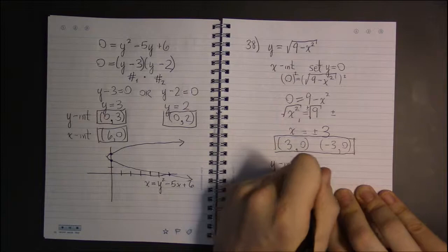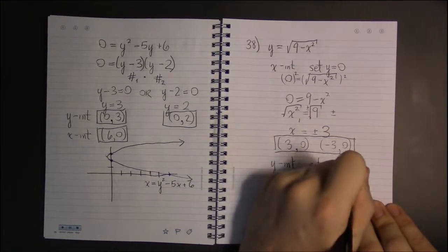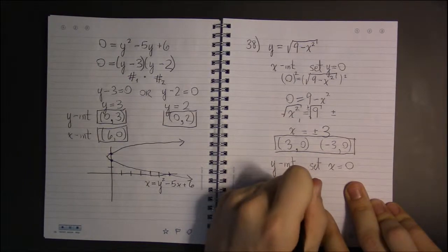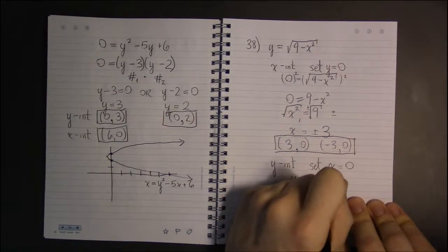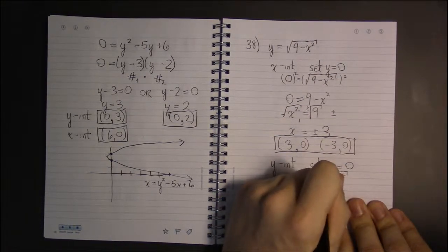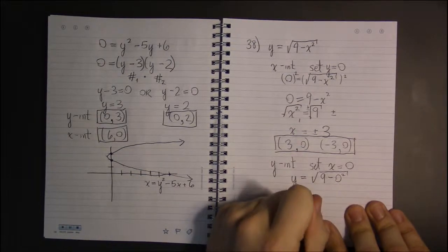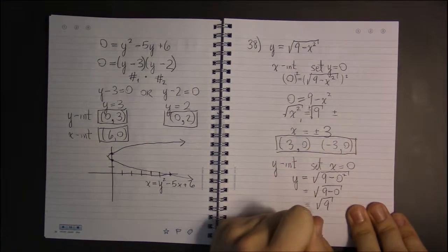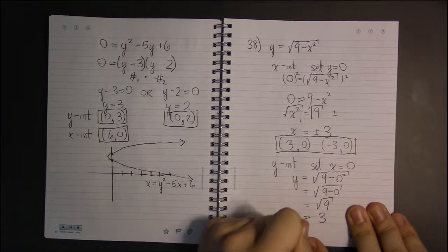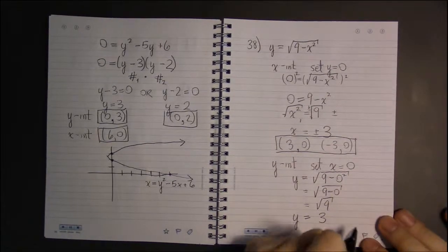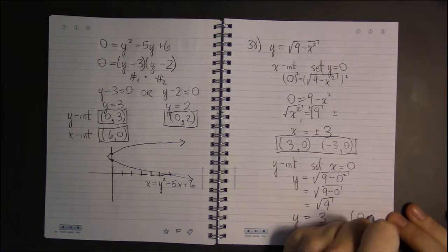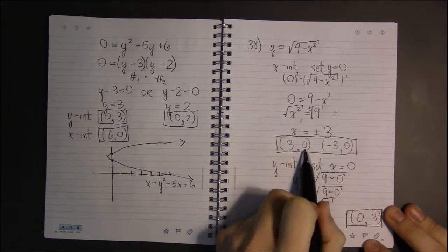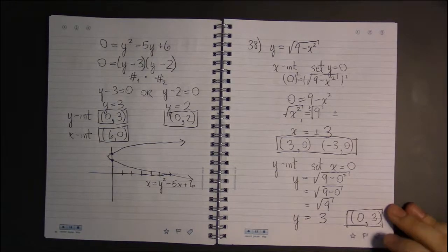For the y-intercept, we set the other variable, x, equal to 0. So if we set x equal to 0, we get y. We're solving for y and plugging in 0 for x. So 0 squared is just 0. So this is 9 minus 0. 9 minus 0 is just 9. And the square root of 9 is simply 3. So when x is 0, y is 3. So that's the point (0, 3). So these are our x-intercepts, where y is 0. And this is our y-intercept, where x is equal to 0.